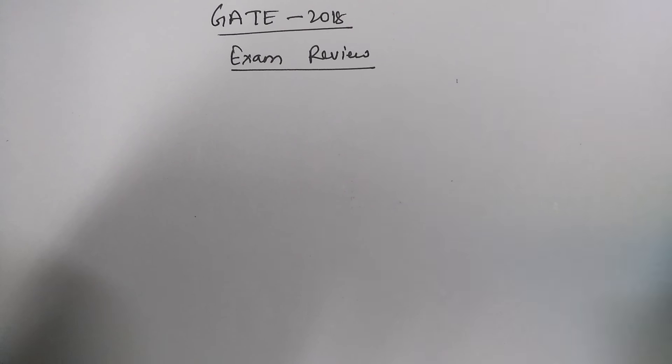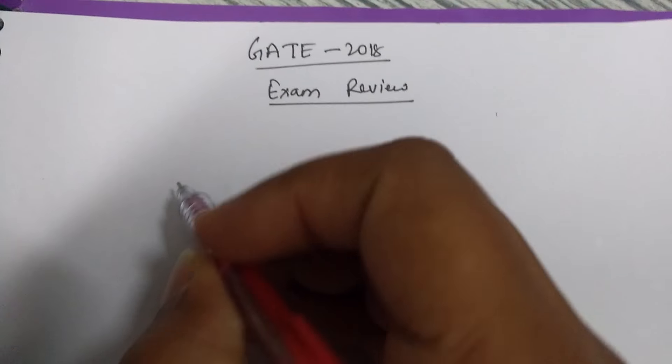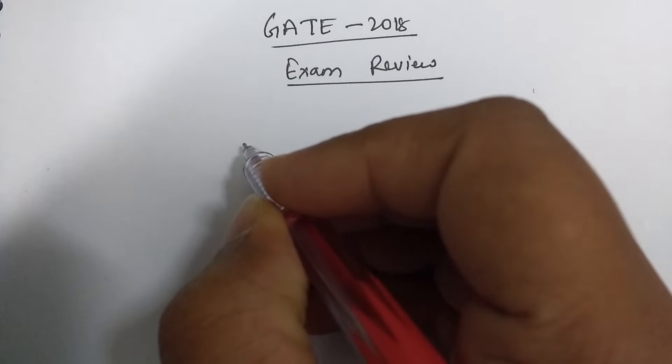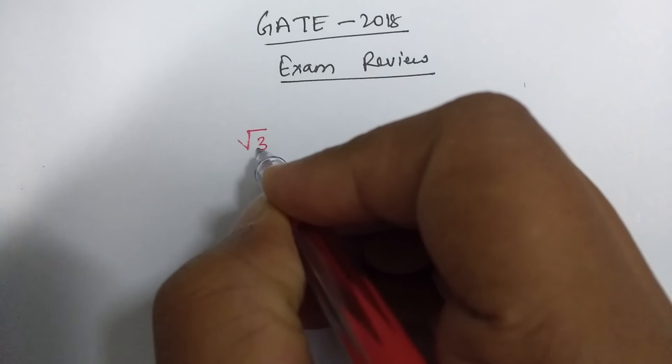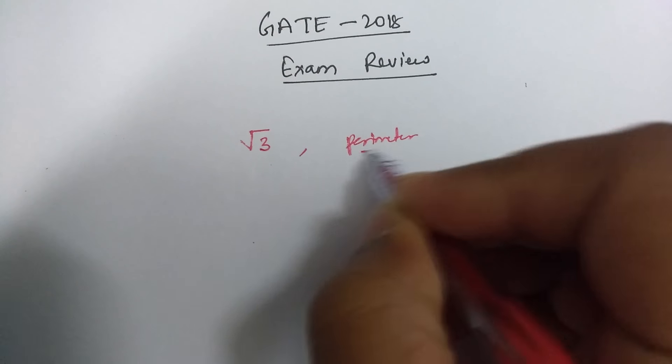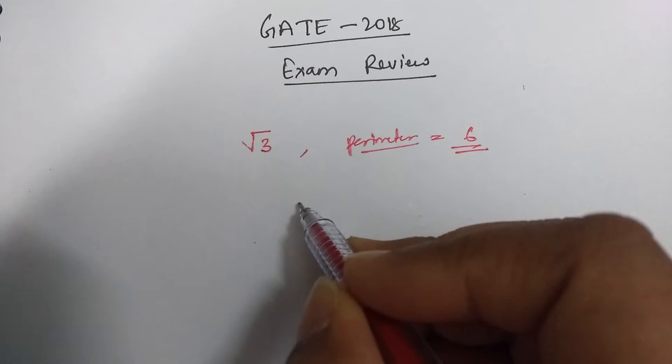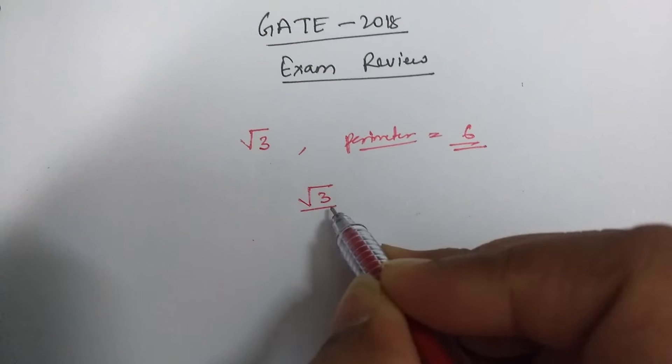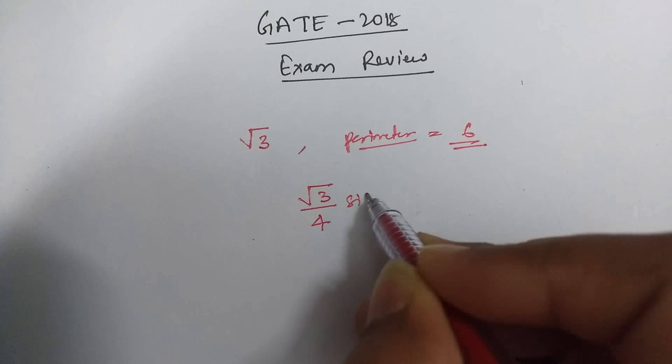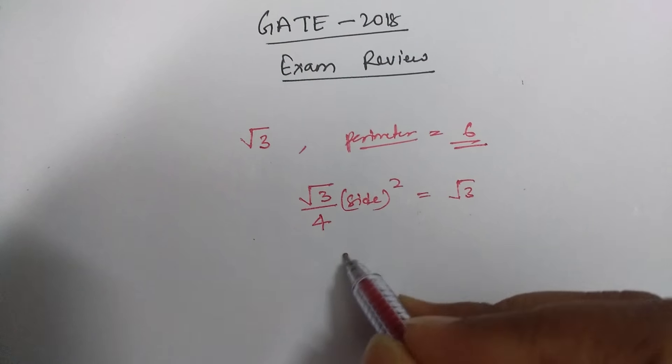So few questions which I remember from aptitude part, one was like it was given that the area of a triangle was root 3 and you have to find out the perimeter. So perimeter of the triangle, it would be 6. So how it would have happened? Because for equilateral triangle, the area formula is root 3 upon 4 side square, and it was given root 3.